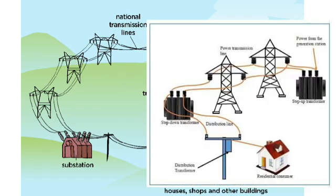The typical voltage levels of transmission lines range from 11 kV to 765 kV. These are the standard high-voltage transmission line levels used for overhead transmission.